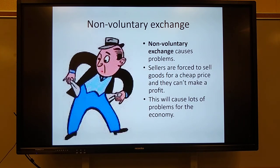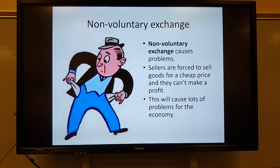Non-voluntary exchange is when the government decides what the price is going to be for things, and almost 100% of the time that just causes problems because the price is either too high or too low. When it's too high, no one can afford it, so nobody buys it. When it's too low, people can afford it but the business owner doesn't make any money. So a good balance is what is needed.